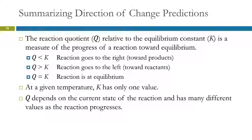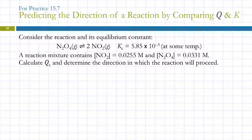Consider the reaction and its equilibrium constant. N2O4(g) ⇌ 2 NO2(g), Kc = 5.85 × 10⁻³ at some temperature. A reaction mixture contains [NO2] = 0.0255 M and [N2O4] = 0.0331 M. Calculate Qc and determine the direction in which the reaction will proceed.